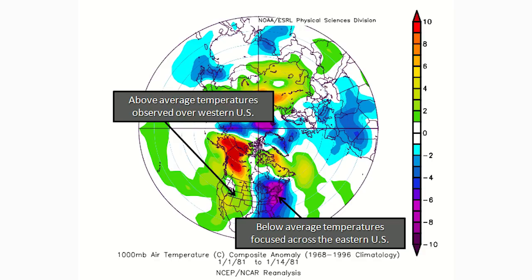A lot of times, especially when a positive PNA is paired with a negative NAO — which we talked about in a previous Winter Thoughts episode — we see a significant chance of troughing and below-average temperatures in the eastern United States. That combination can really create some potent cold air in the eastern US. This is a pattern we frequently see happen pretty much every winter. Last winter was a big exception — we hardly saw any negative NAO, and that was a big player in not seeing cold temperatures in the eastern United States.